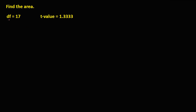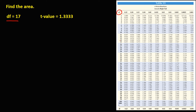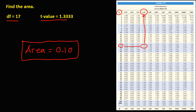For the last given, the degrees of freedom is 17 and the T value is 1.33. Therefore the area is 0.10. So this is how to find the area under the T distribution.